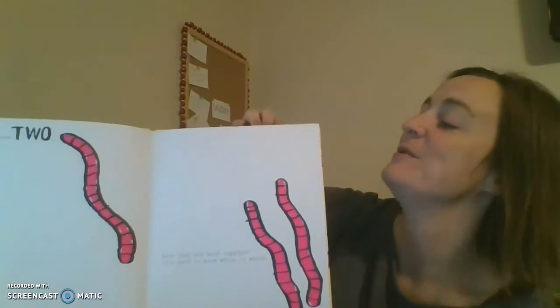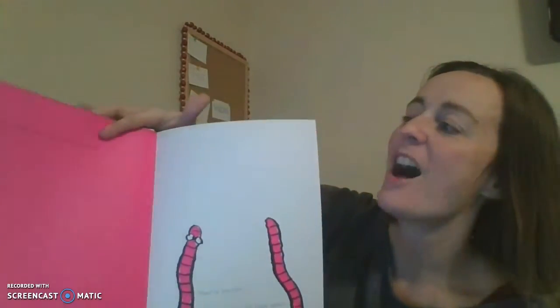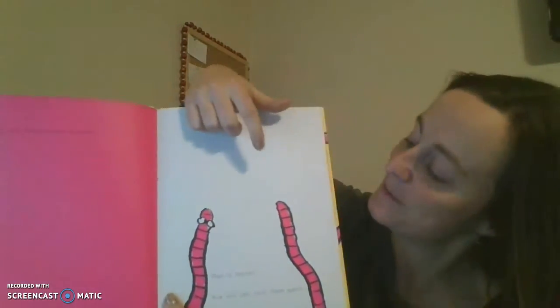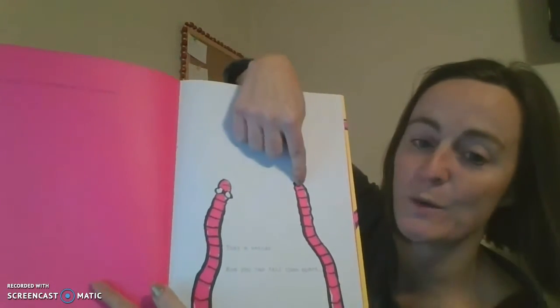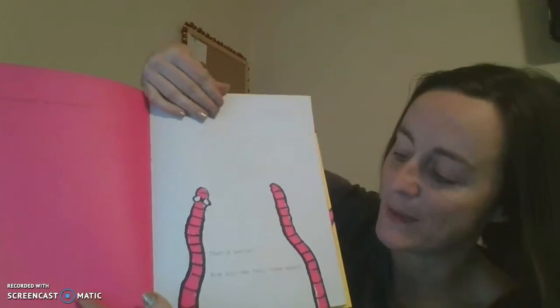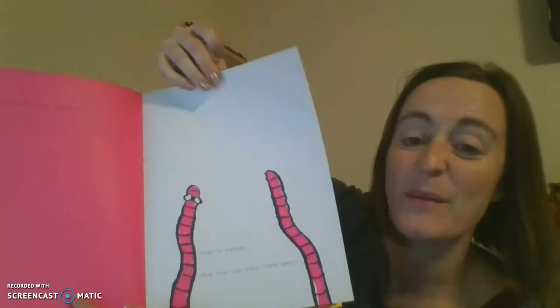Can you draw a worm? I bet you can draw a worm. I'll give the second worm glasses. Now you can tell he's the second worm. First worm, second worm. That's better. Now you can tell them apart.